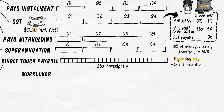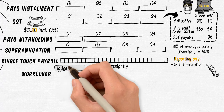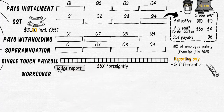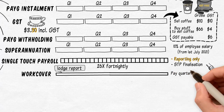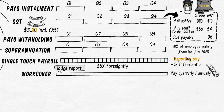Next is WorkCover — this is compulsory workers insurance that every employer needs to have, to cover costs in case your employee gets hurt while working for you. You have to lodge a report to WorkSafe Victoria once a year at the start of the year, disclosing your industry, estimated wages, and other information that helps WorkSafe estimate your WorkCover insurance bill. You can choose to pay it either quarterly or annually.